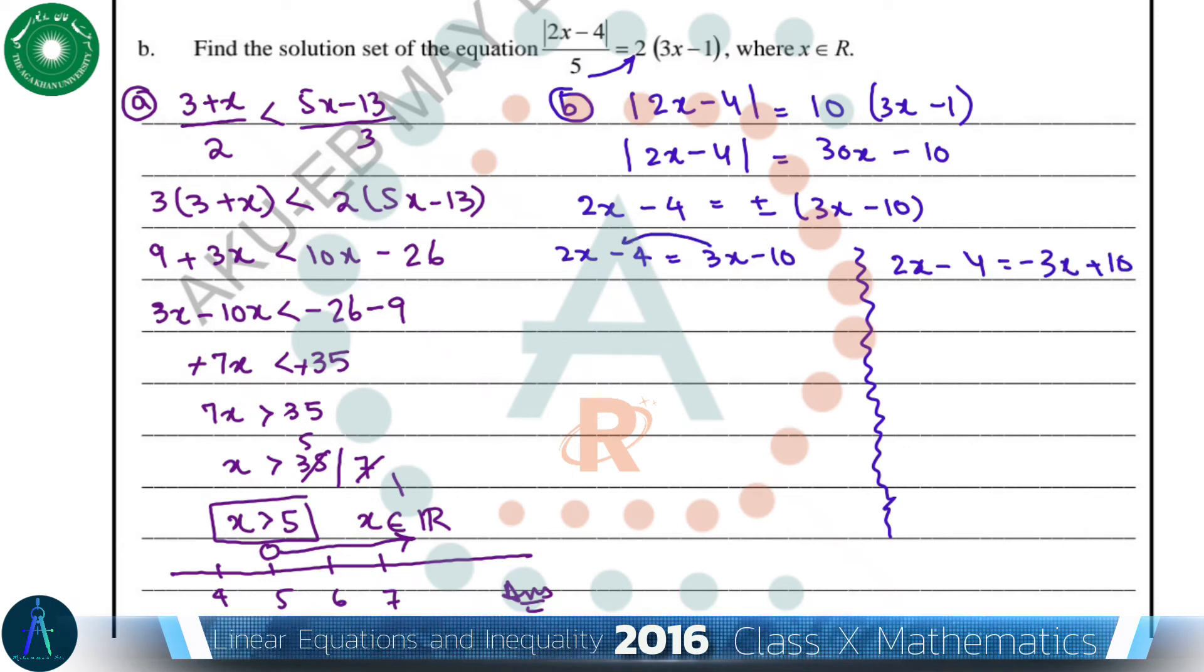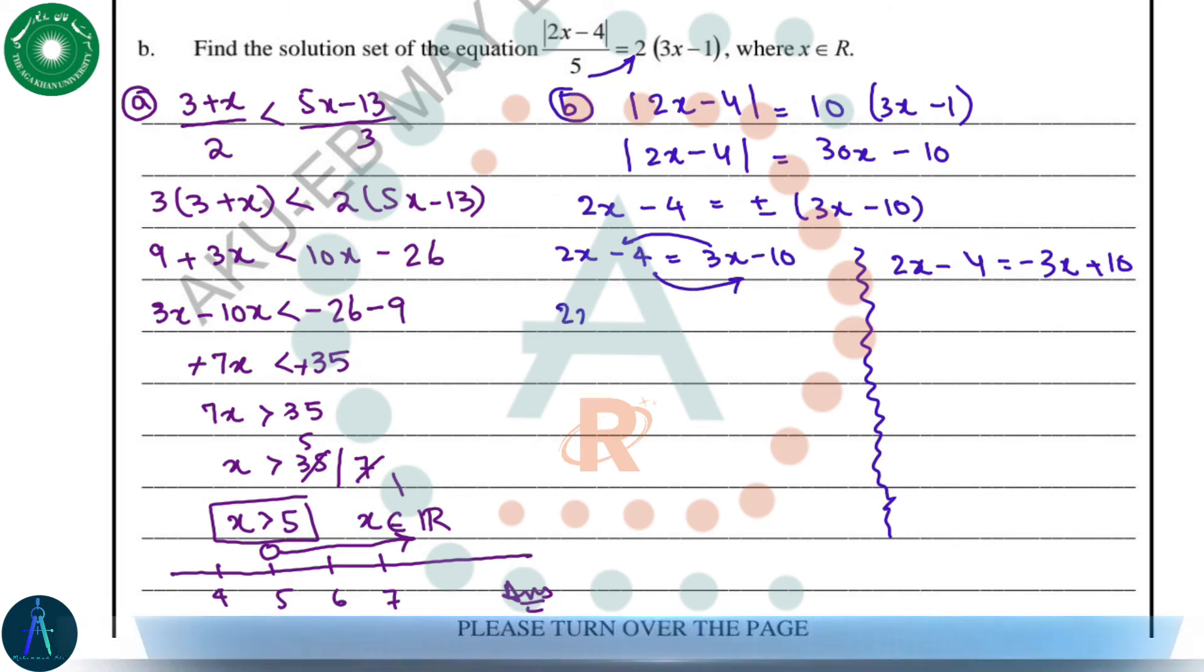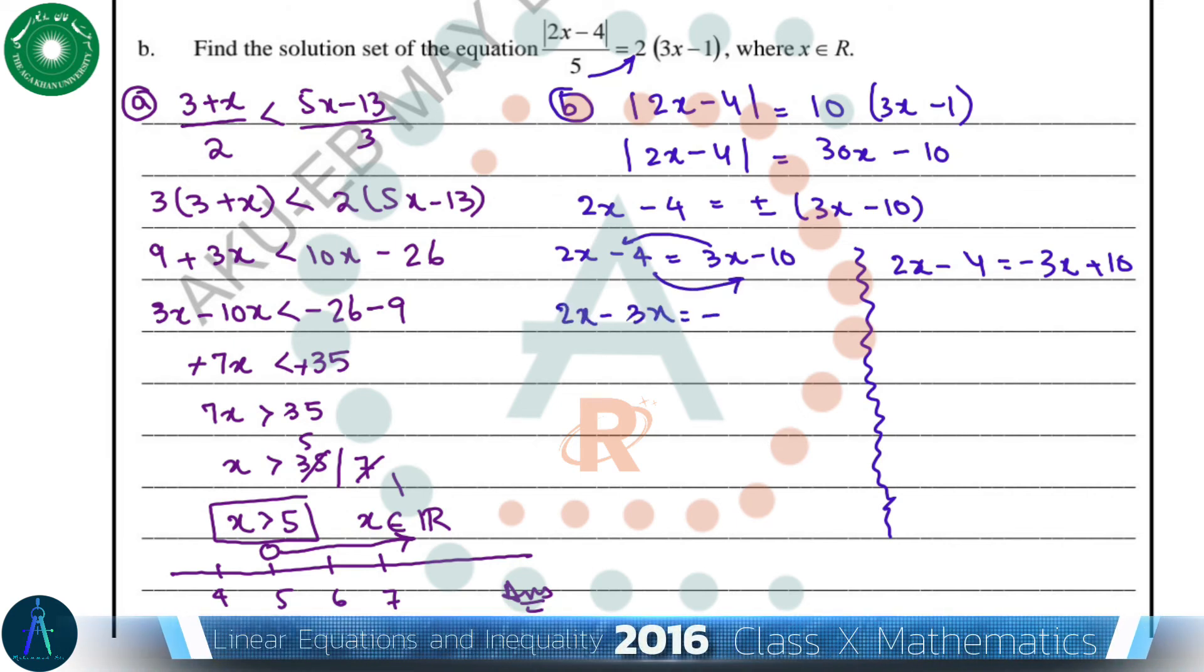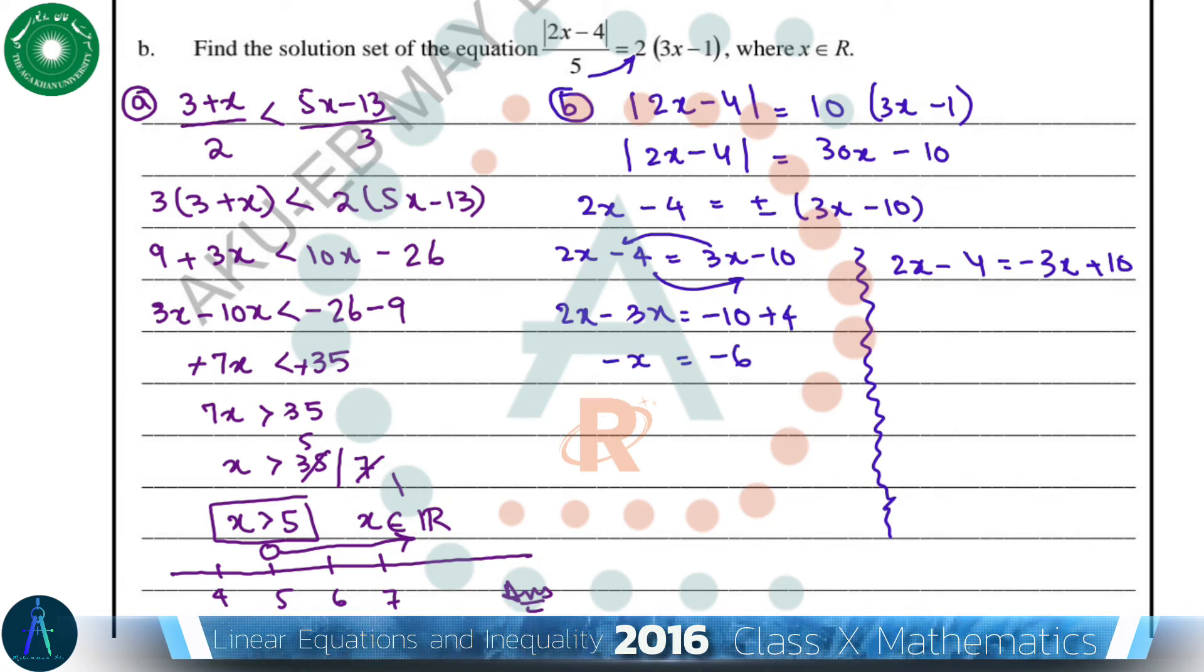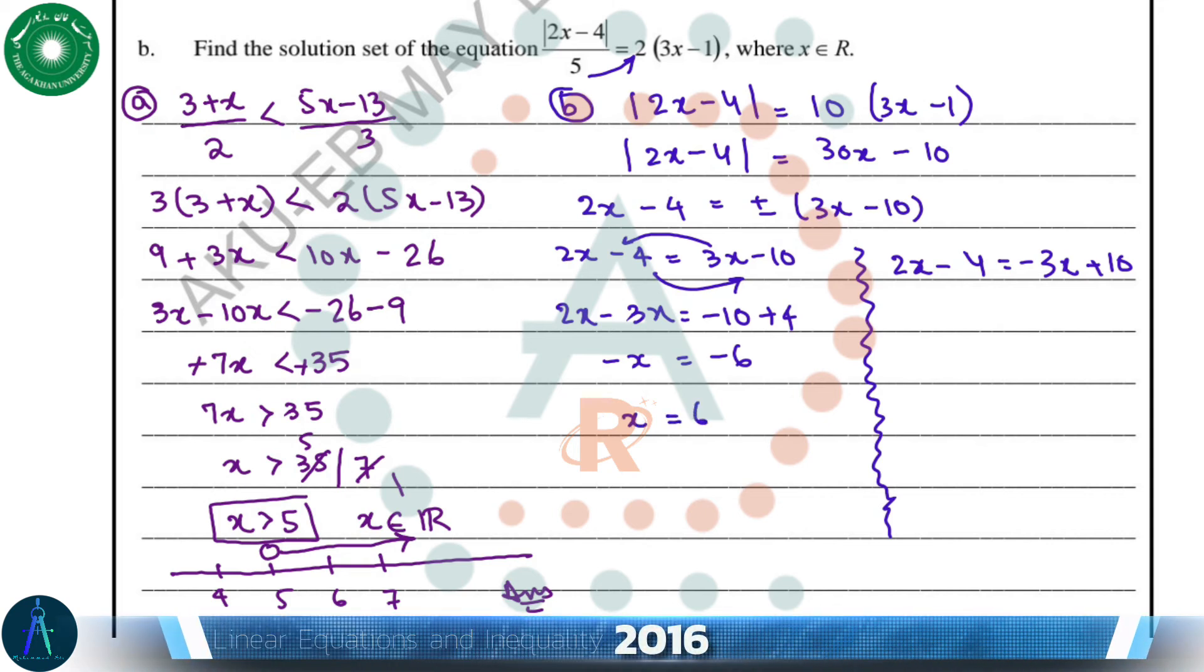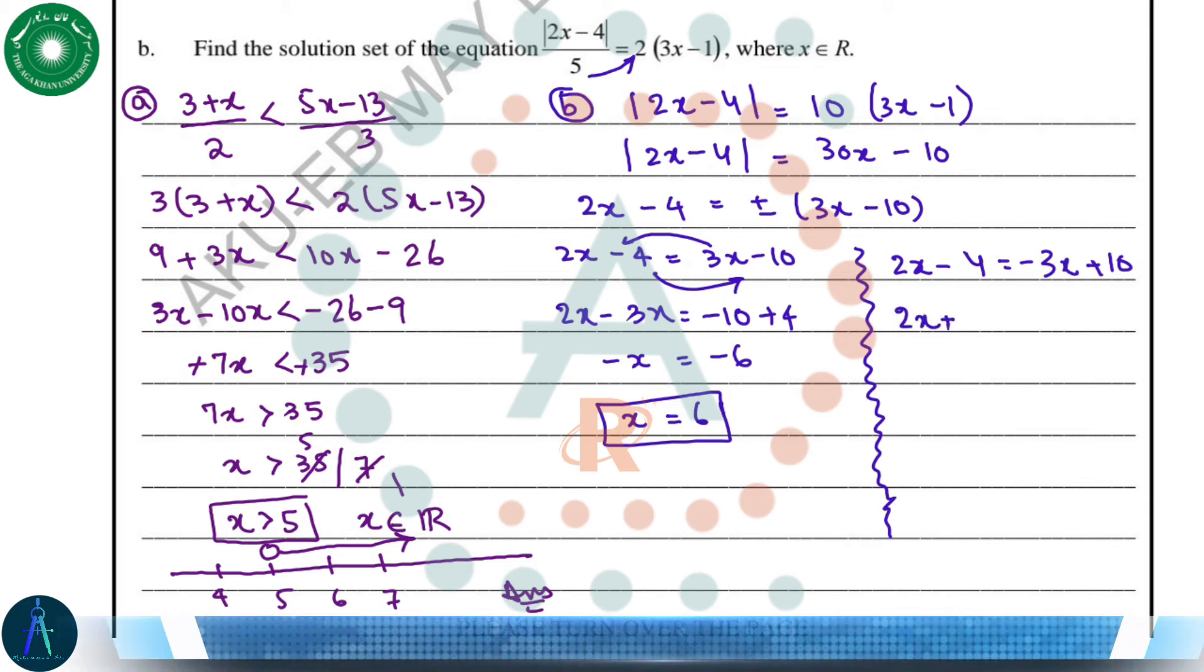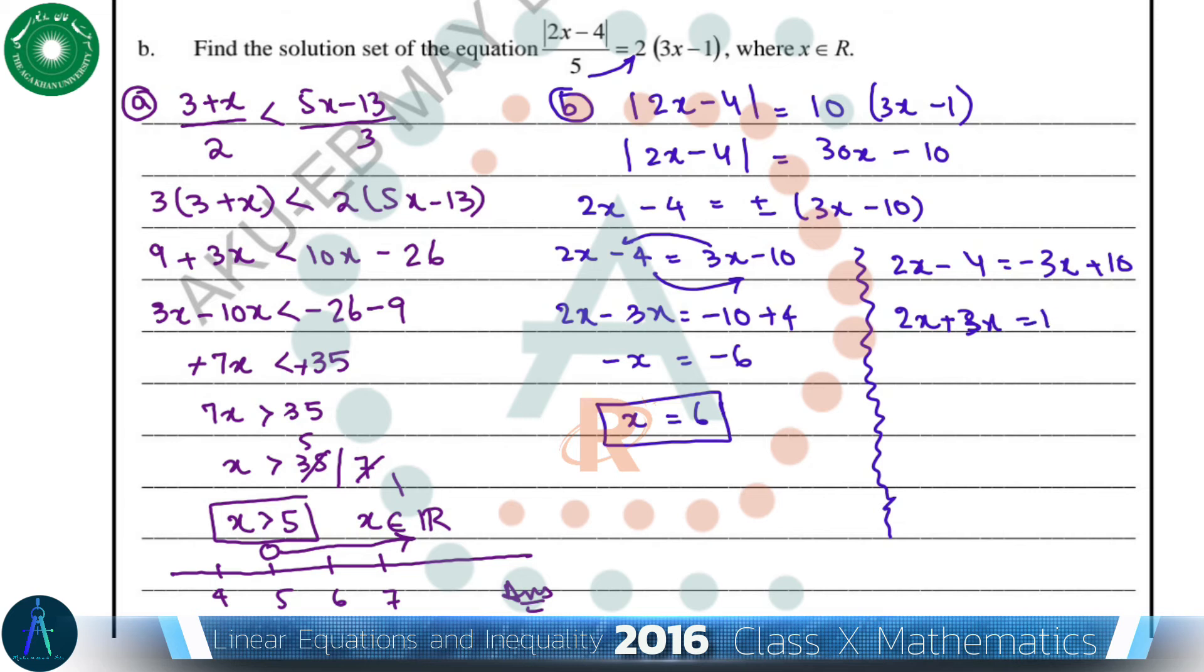From this, -x = -6, so x = 6. And for the other case, 2x - 4 = -(3x - 10), which gives 2x - 4 = -3x + 10. Then 2x + 3x = 10 + 4, so 5x = 14.